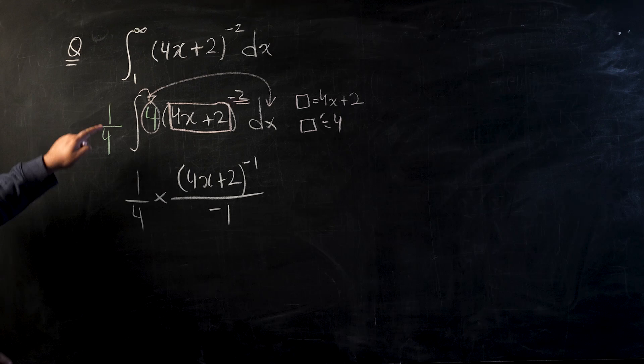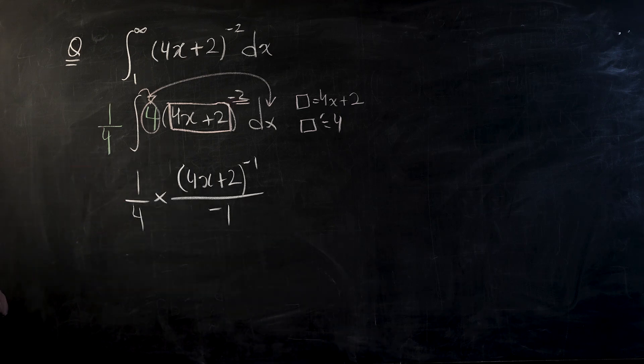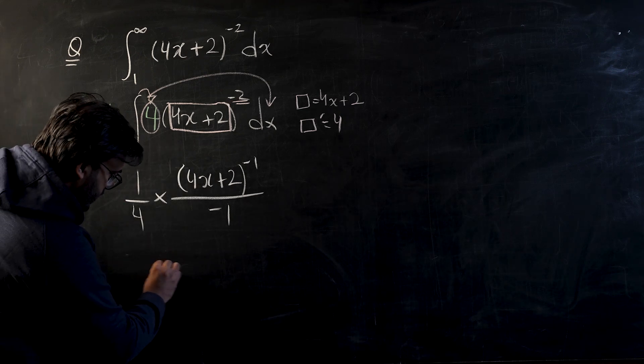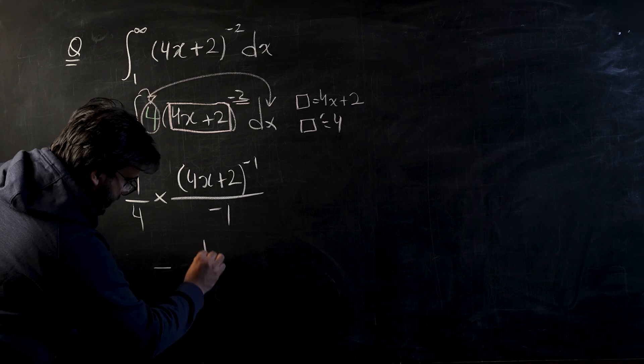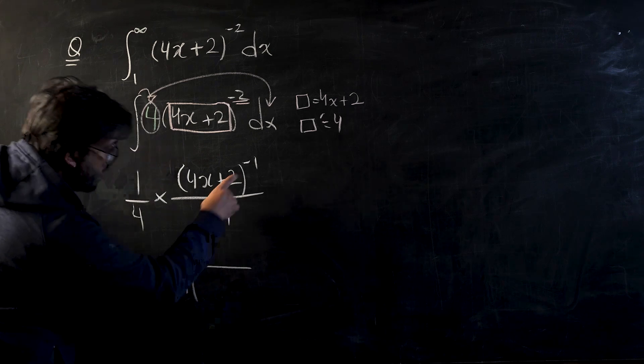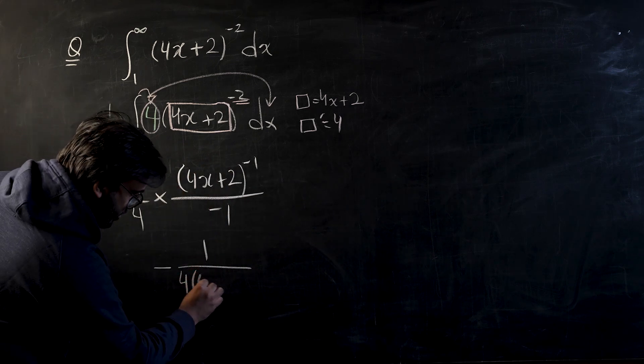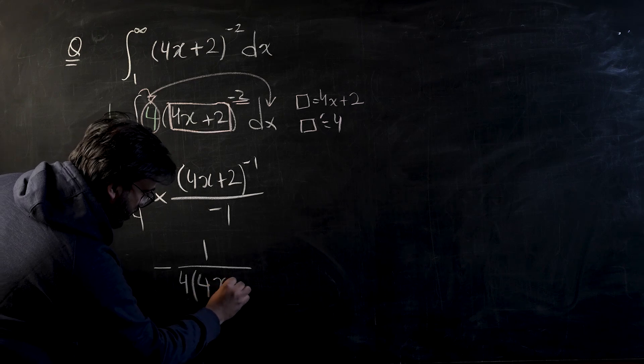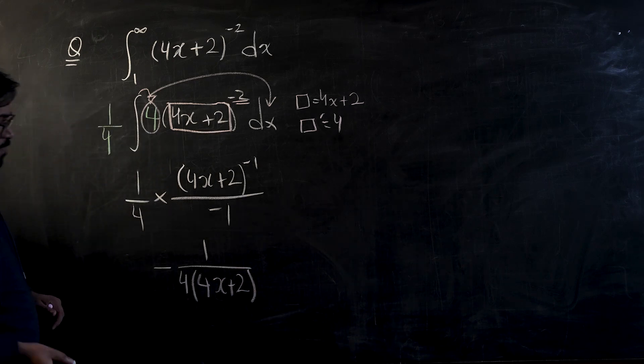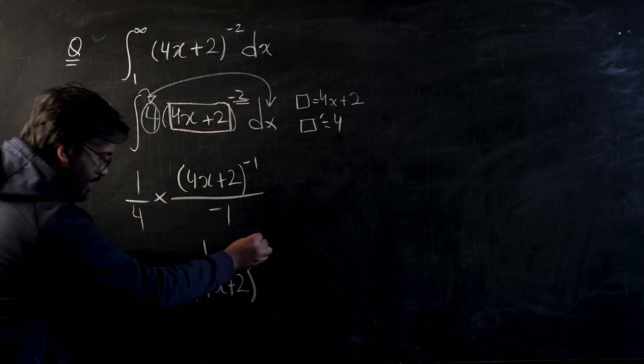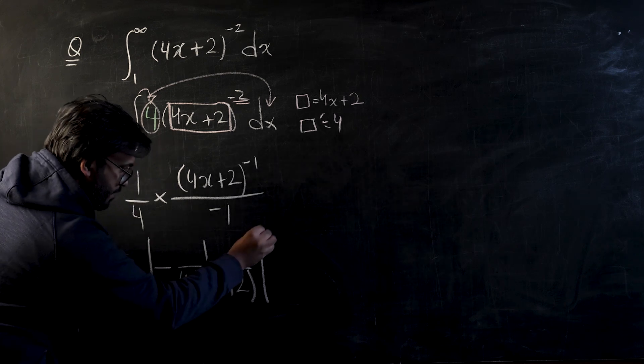So now our integral is almost complete. Let's tidy it up a bit - 1 over 4 times this power is negative, now I'm going to bring it to the denominator so that it becomes positive. Let's come to the most crucial part which bugs every student: how to put infinity as a limit over here.